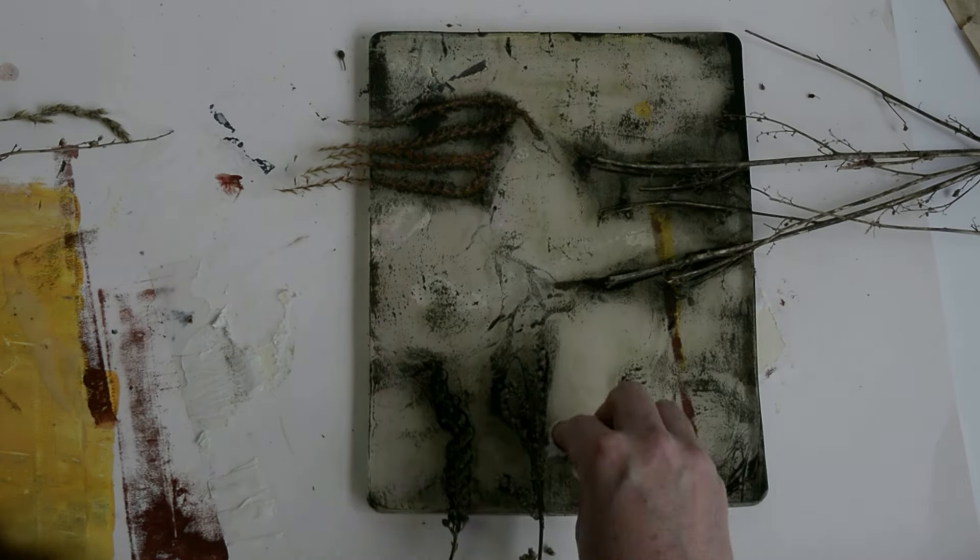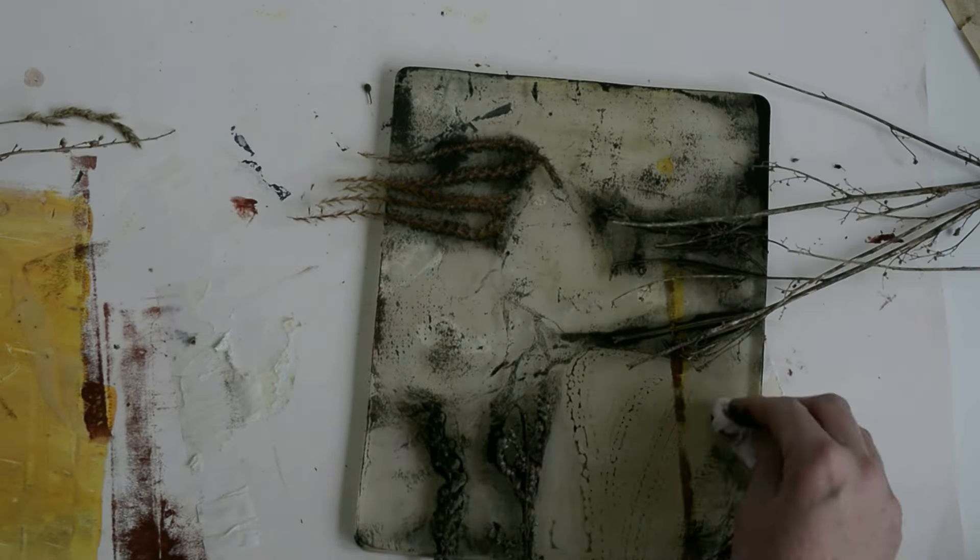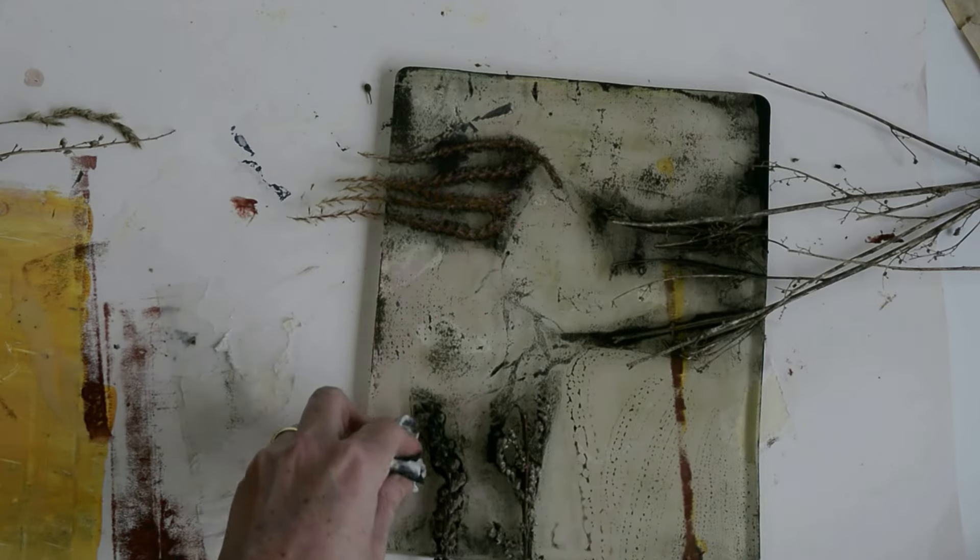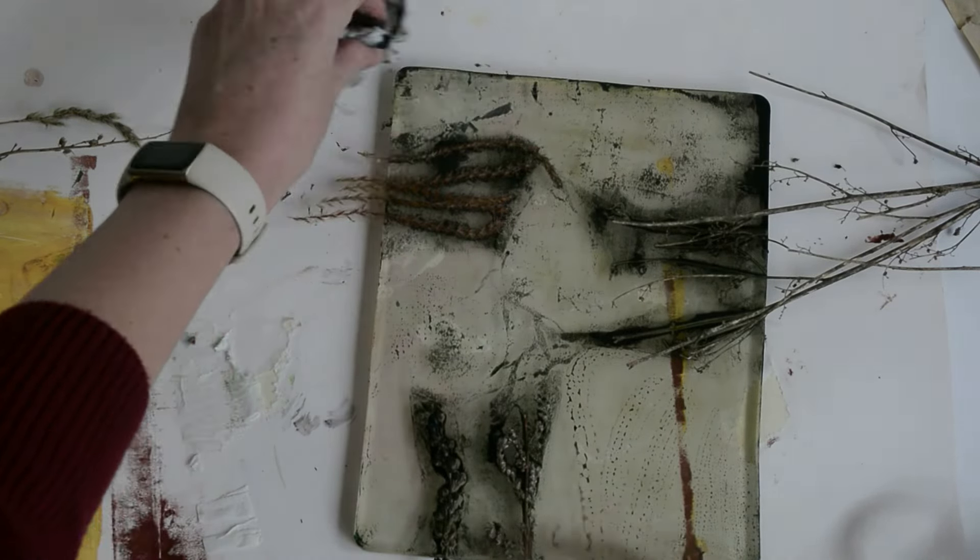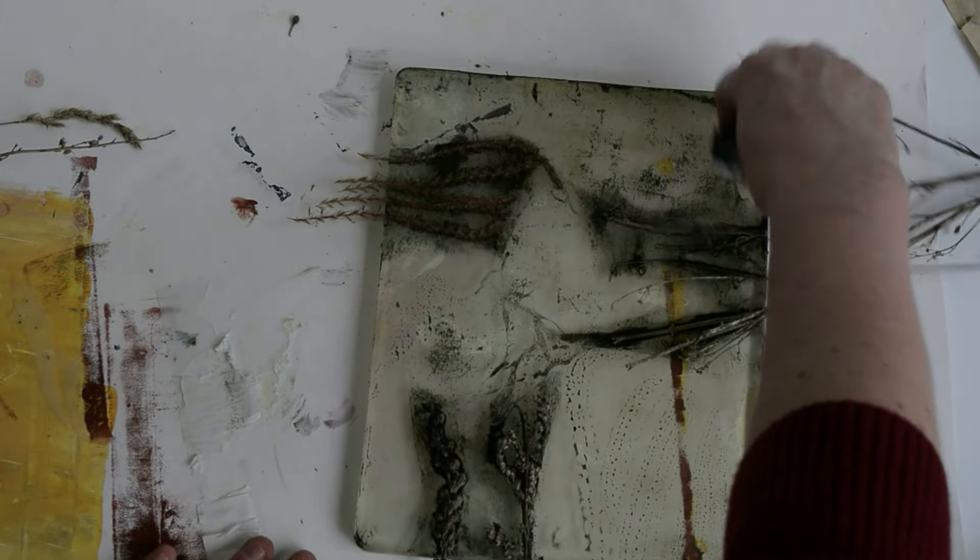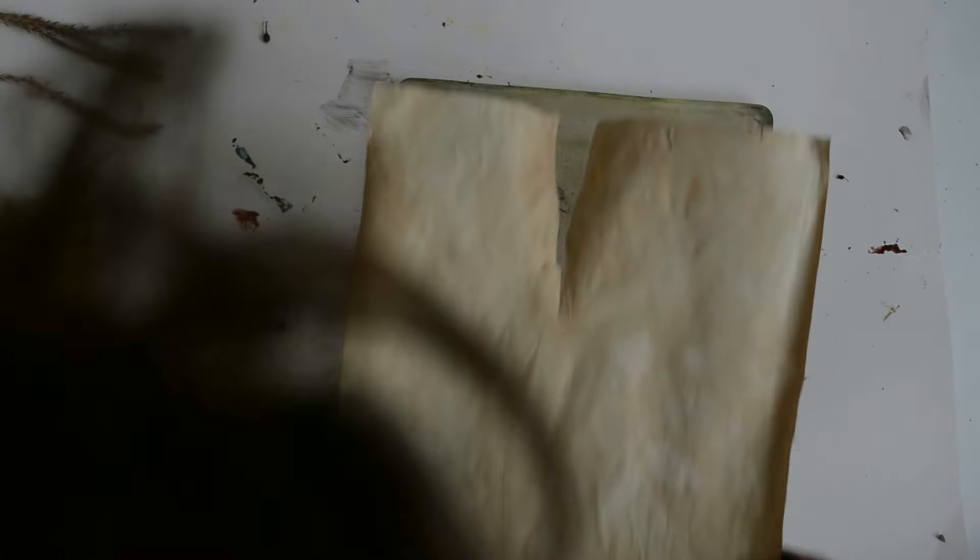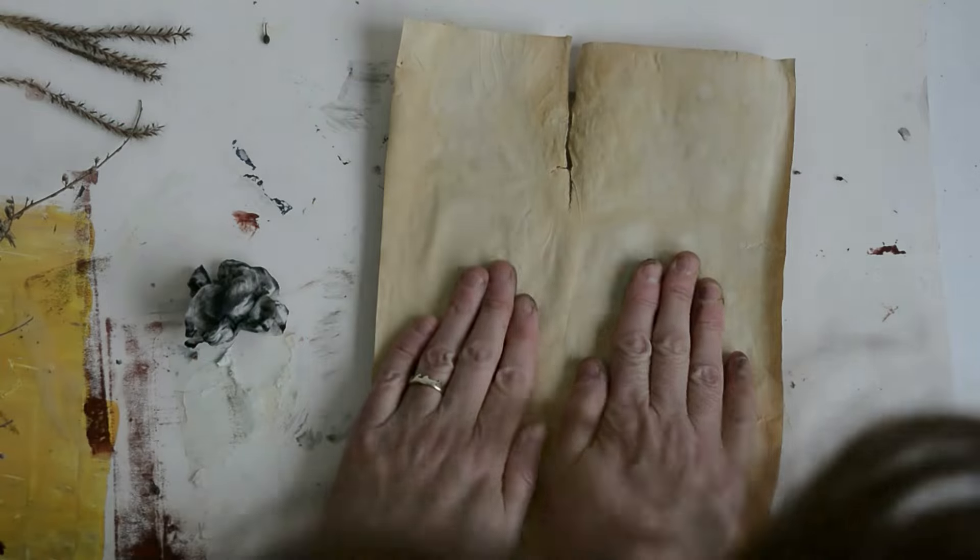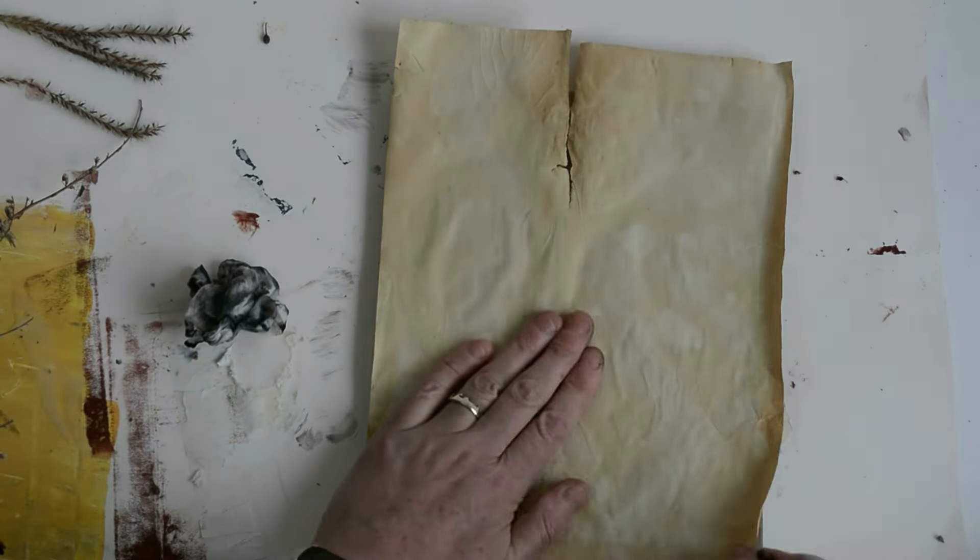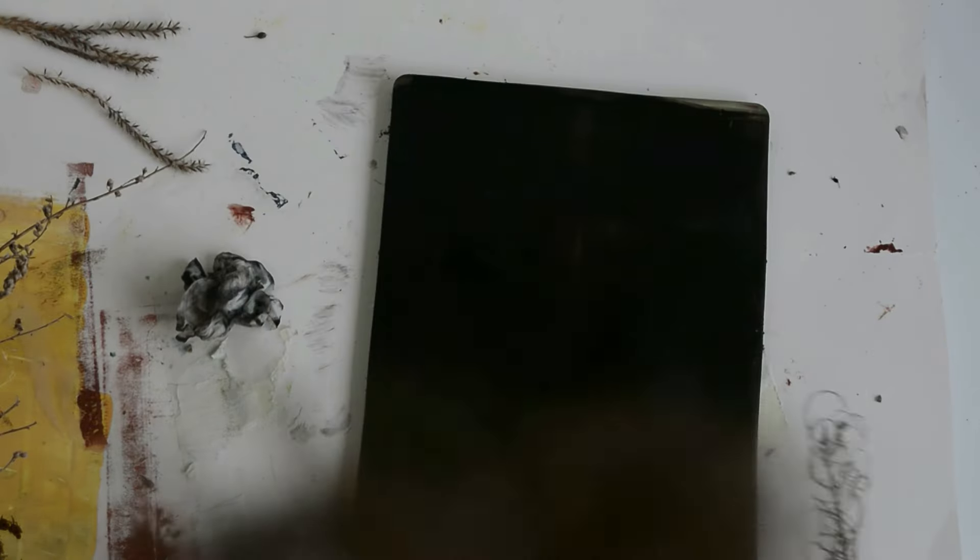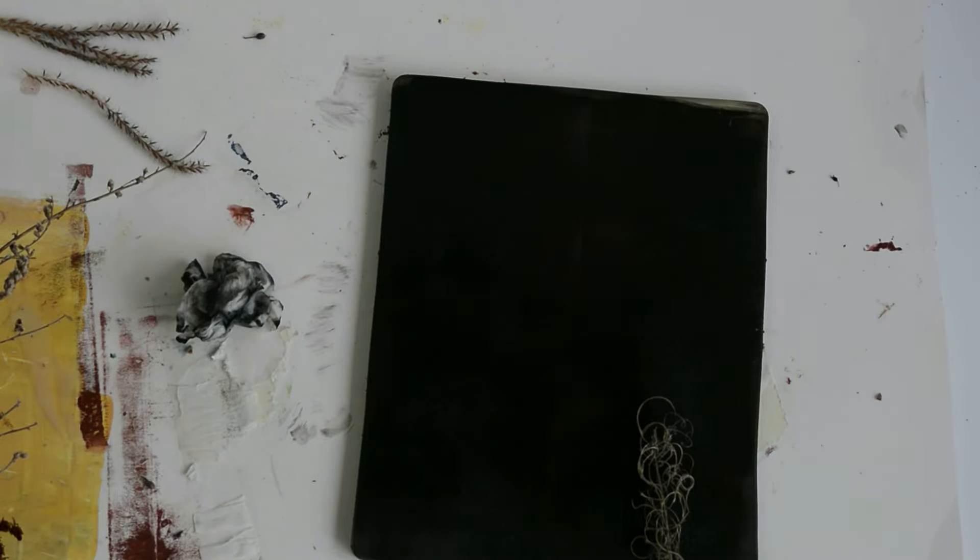You're going to need a lot of prints to choose from. So I'm just removing some of that excess black ink from the plate so that I can take a negative print. Remove the objects and now I'm taking a ghost print, it's a positive, taking a ghost print which is a positive print.